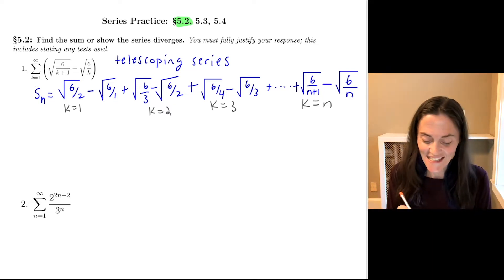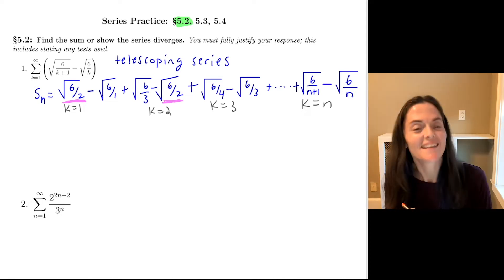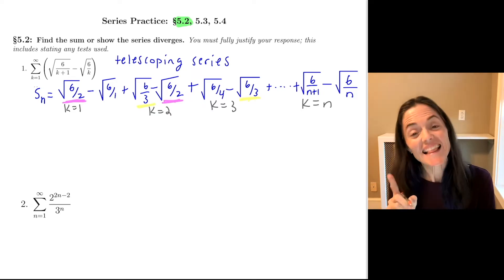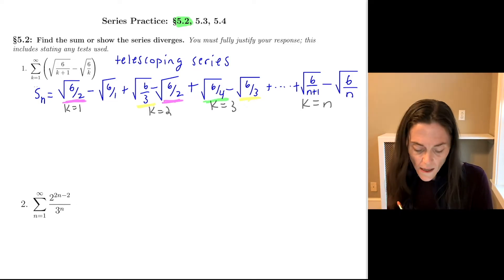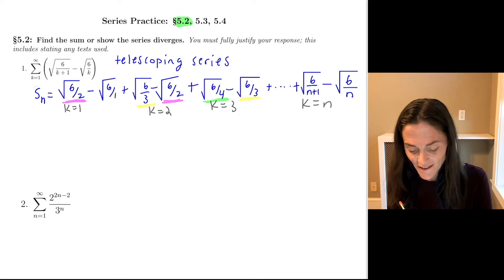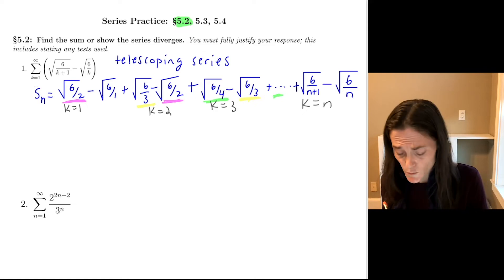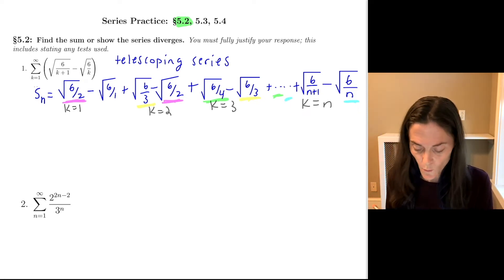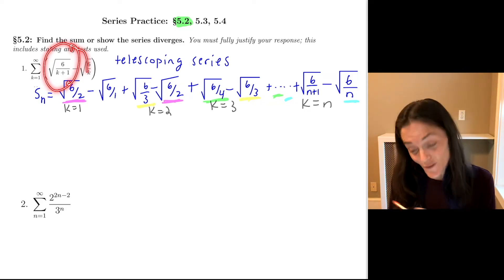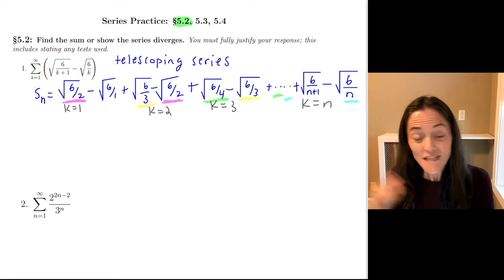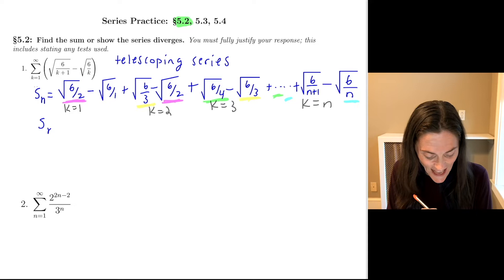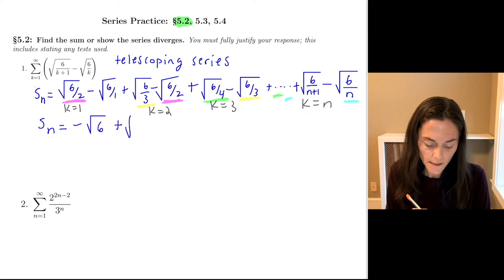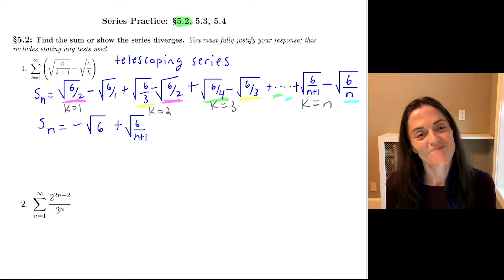Now, telescoping — this one and this one add to zero, this one and this one add to zero, and √(6/4) will be subtracted off in the k=4 term. The √(6/n) will cancel with the (n−1)th term. So we're left with just two things. The simplified S_n is negative √6 plus √(6/(n+1)).